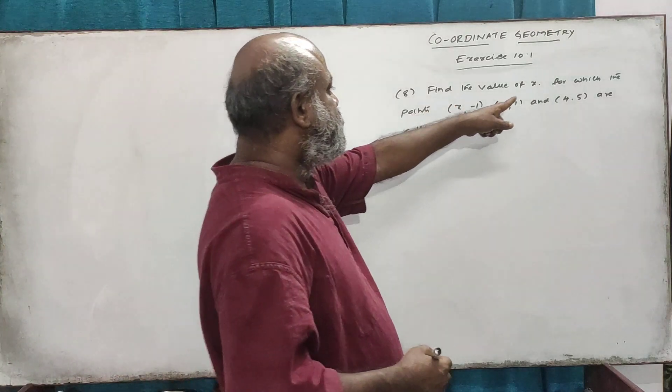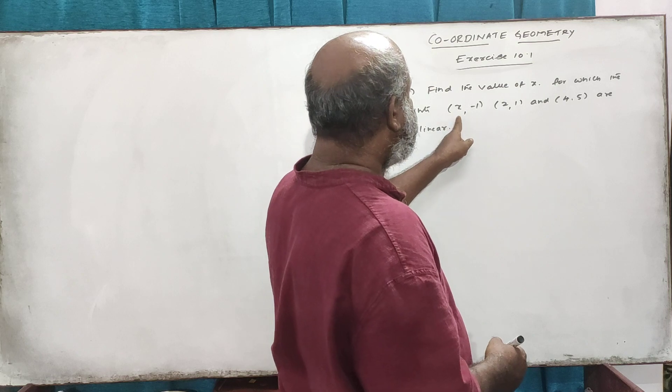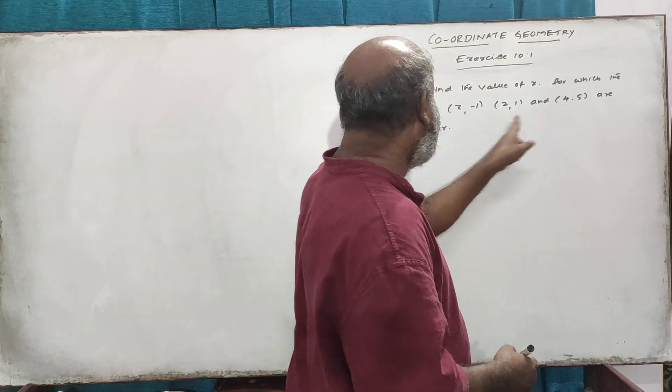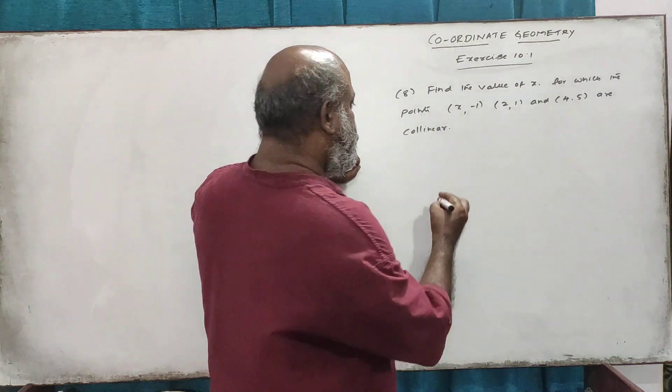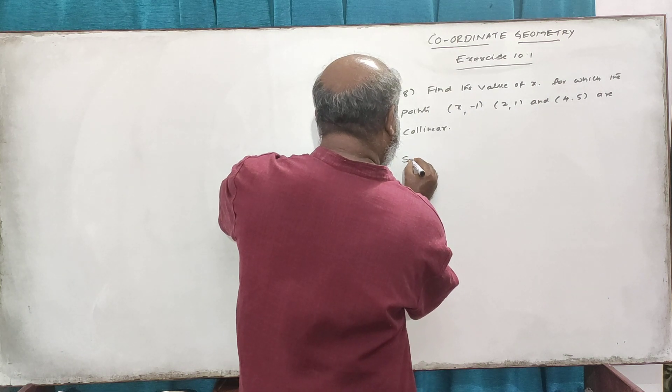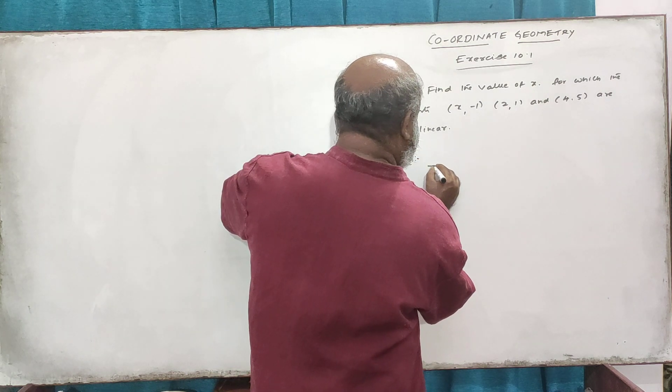You find the value of x for which the points, this one and this one and this one, are collinear. Collinear means the points are on the same line.